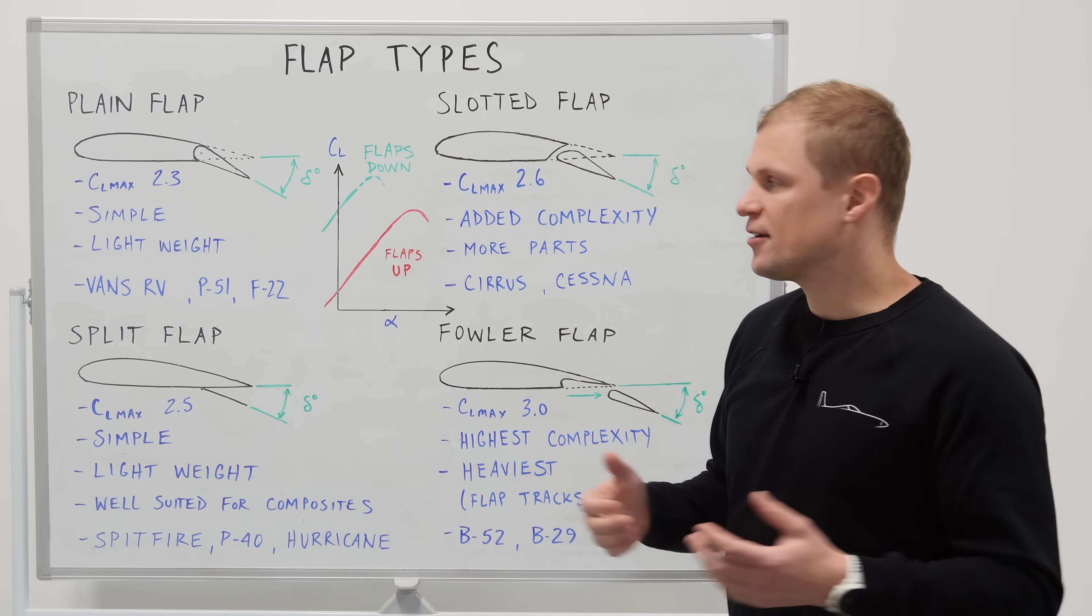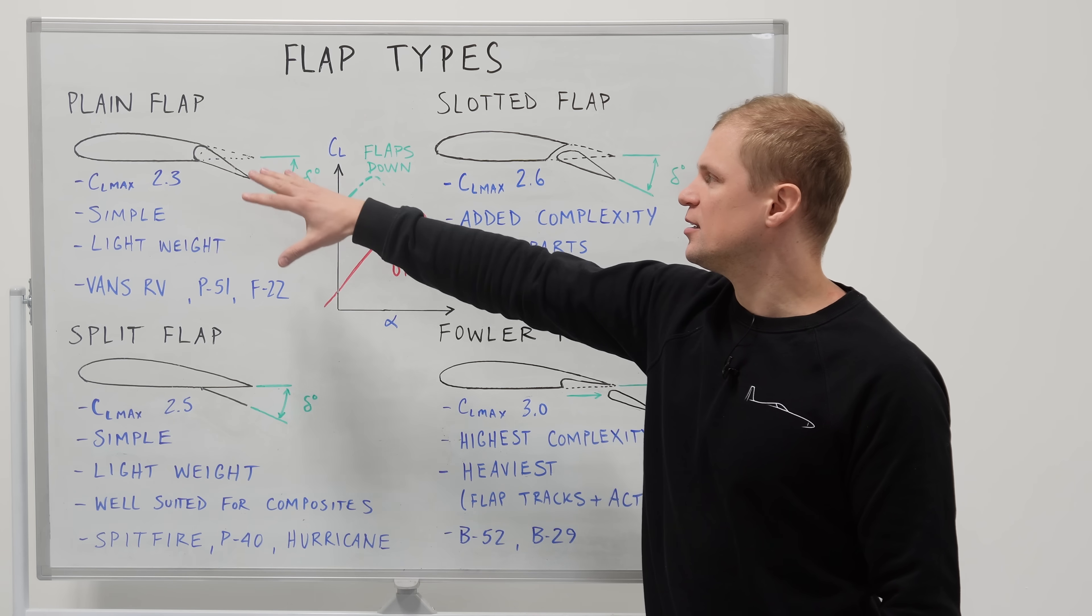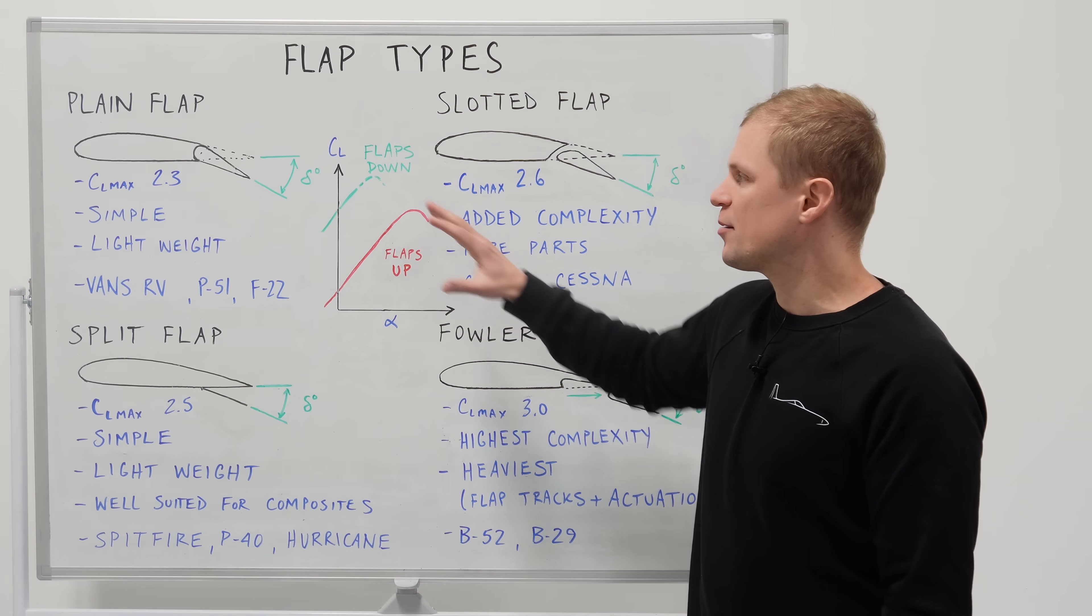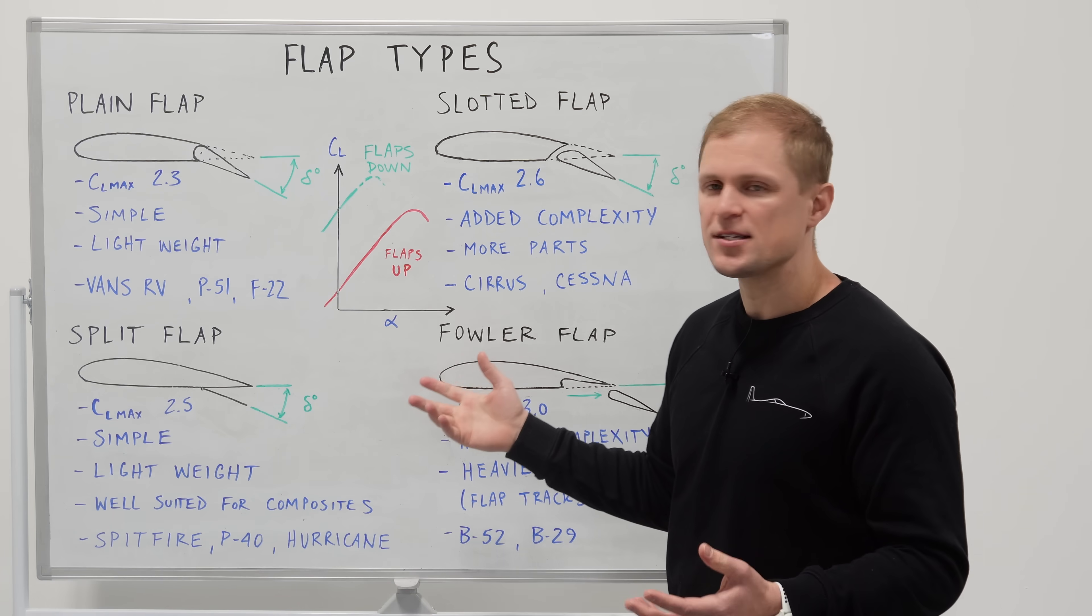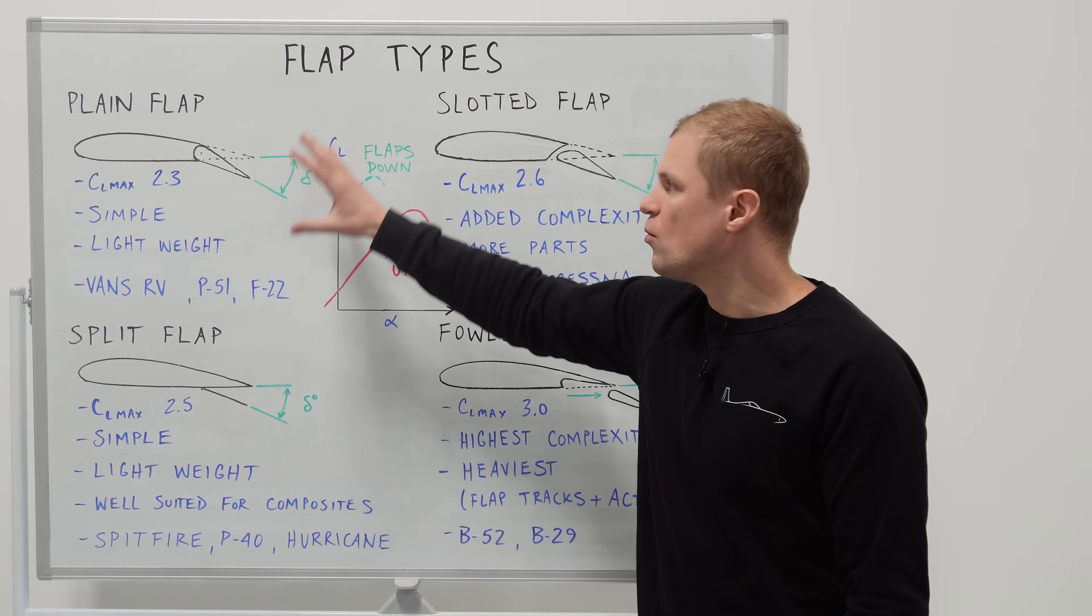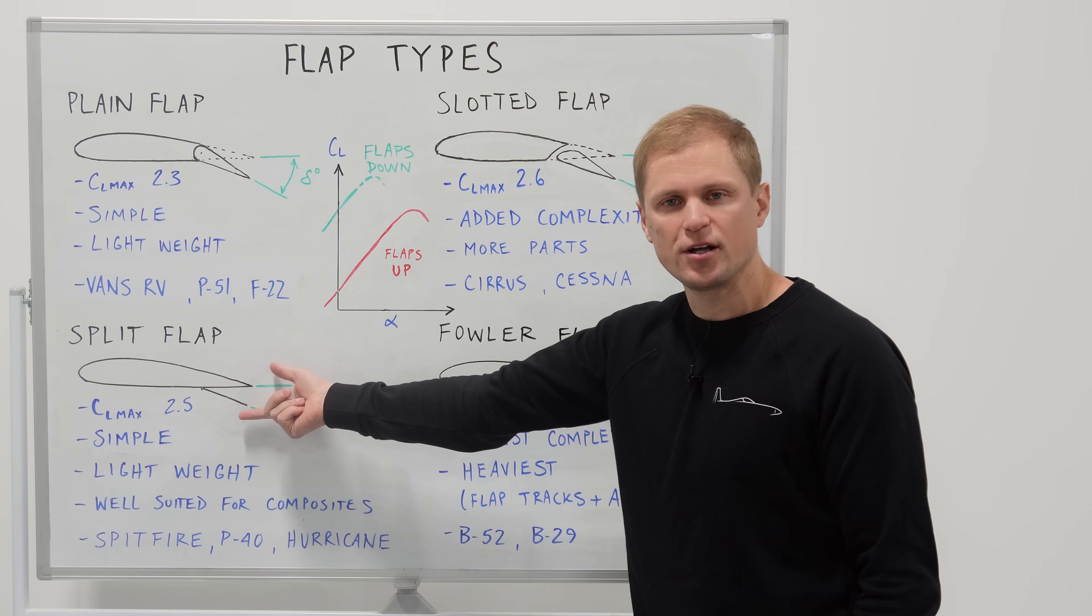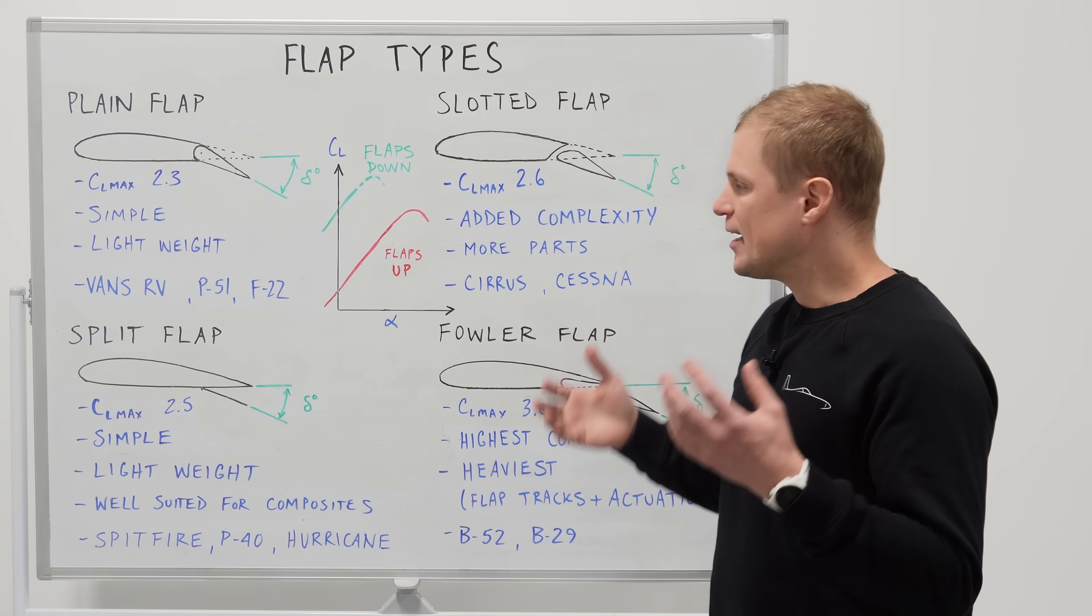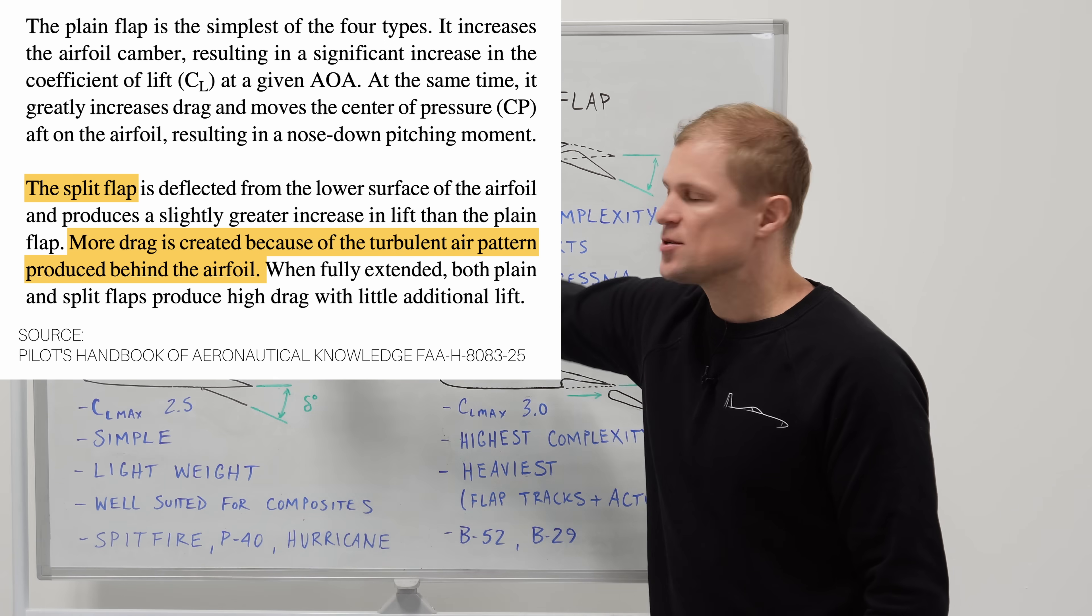What about for a deflected configuration when we drop the flaps what does the drag look like there? So we saw there's somewhat of a hierarchy here for lift with the plain flap being at the bottom and the Fowler flap being at the top for lift. That same hierarchy somewhat exists for drag but in the opposite direction with the plain flap and split flap presenting a little bit more drag than the slotted and Fowler flap. If you look this up you'll see sometimes some conflicting information between how the split flap and plain flap compare for drag. It's often stated that the split flap has more drag than the plain flap. I think that intuitively makes sense. It looks like this should have more drag because you have this separated trailing edge almost sort of a wedge profile that's separating flow and that seems like it should present more drag than the plain flap. That's not exactly the case but this often gets misstated even in some of the FAA pilot training material.